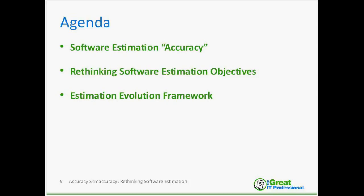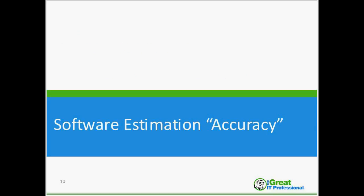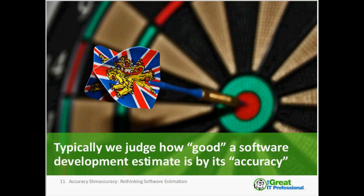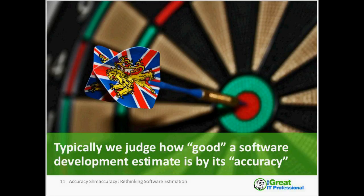Let's talk about estimation accuracy and what we mean by that. Typically when you hear 'how good was your estimate,' you think about it in terms of accuracy. Our standard definition of accuracy is the condition or quality of being correct — not having an error or defect present; precision or exactness.